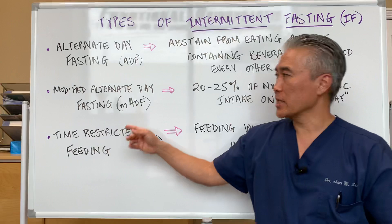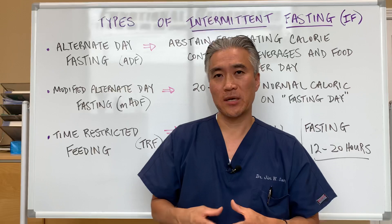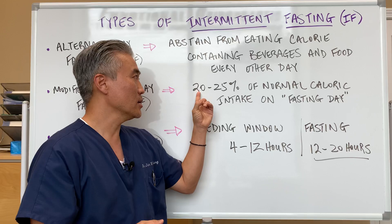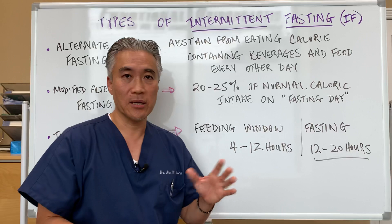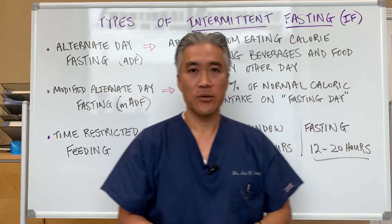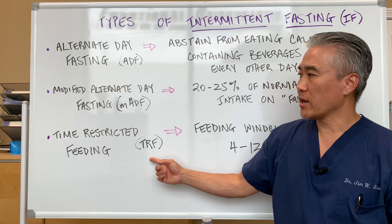The next one is modified alternate day fasting. This is not a true fast because on the day that you're supposed to be fasting, you are actually taking in 20 to 25% of your normal caloric intake. So let's say you have a 2000 calorie diet — on the fasting day you're only taking in about 500 calories, so it's not a true fast.